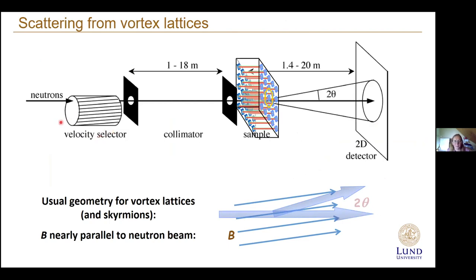These flux lines have a fixed amount of magnetic flux, so as a function of applied field you can work out exactly how far apart they must be. It turns out that the distances between these objects fit perfectly into the small angle neutron diffraction range. The objects are monodisperse, making them a good example for diffraction in this range. The standard geometry has the field nearly parallel to the neutron beam; you start with field parallel to the beam and rotate slightly to meet the Bragg diffraction condition.